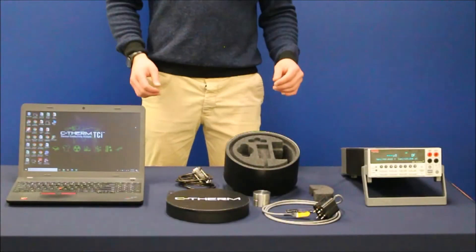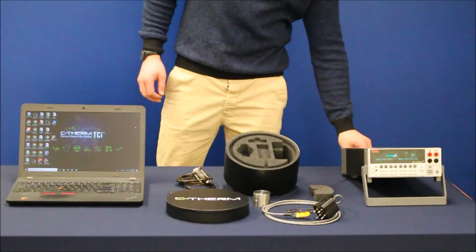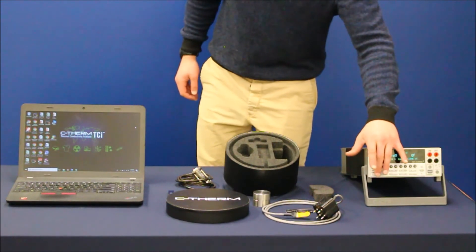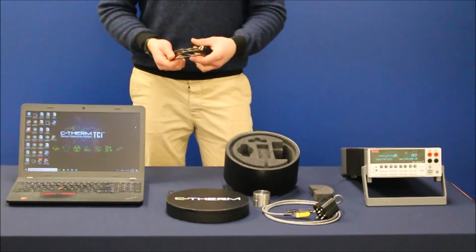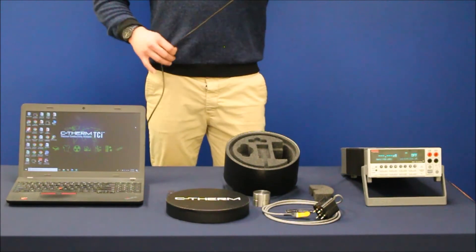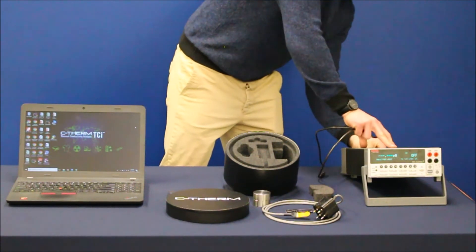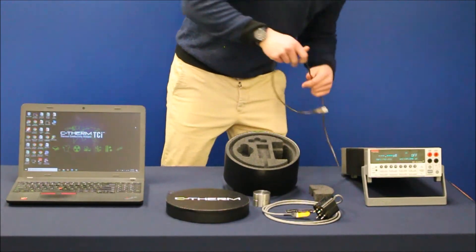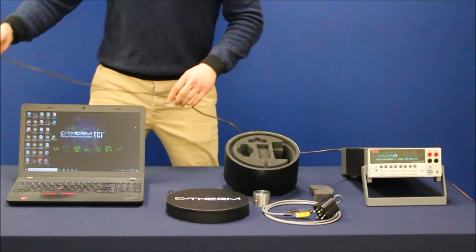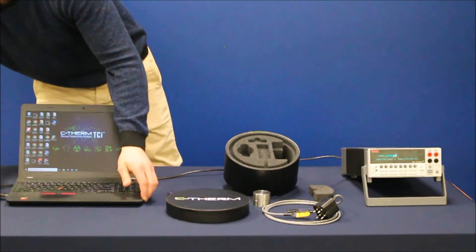When setting up the kit, you're first going to want to plug the power into your source measure unit and turn it on, and then you're going to want to take your RS-232 to USB serial communication cable, plug the RS-232 end into the back of your source measure unit, and plug the USB end into a USB port on your PC.